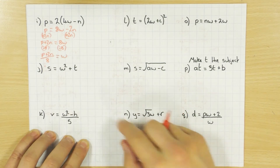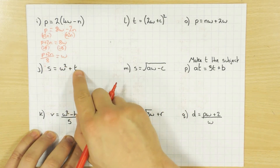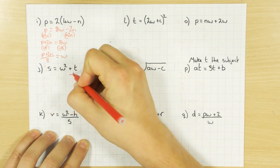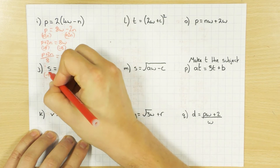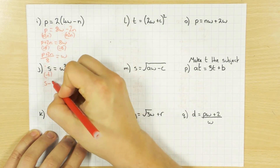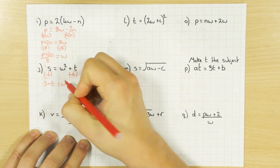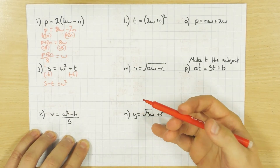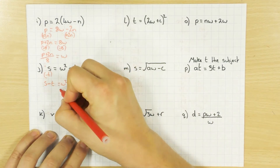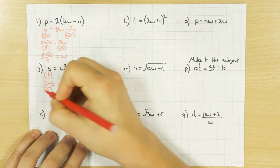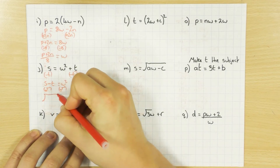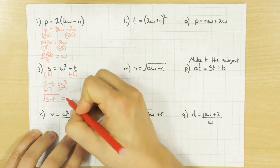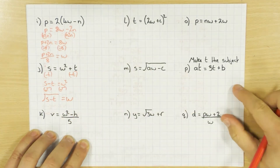This one's a bit more interesting because I've got W squared plus T. First I'm going to get rid of that T — do the opposite and take away T from both sides. So S minus T equals W squared. I don't want W squared, I just want W. What's the opposite of squaring a number? We square root. So I'm going to square root both sides, giving the square root of S minus T on the left, and then W squared square-rooted just leaves W.